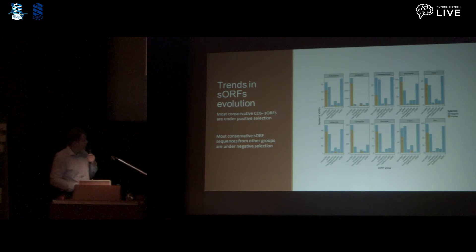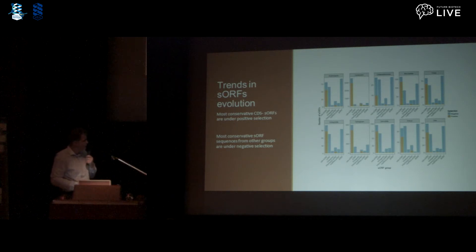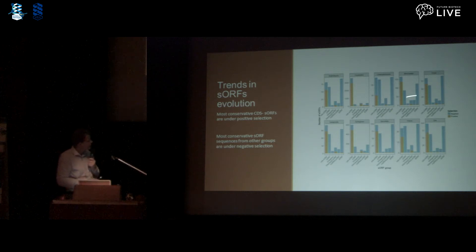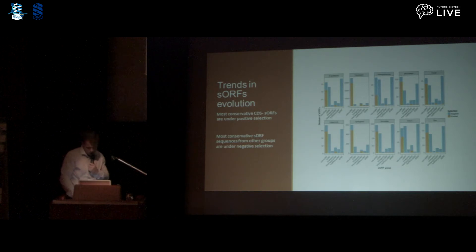To reveal large-scale trends in sORF evolution, we calculated the ratio of non-synonymous to synonymous substitutions (dN/dS). We found that most conserved CDS sORFs are under positive selection. In contrast, most conserved sORF sequences from other groups are under negative selection. It appears that CDS sORFs are being depleted from the genome, though we don't yet know why.